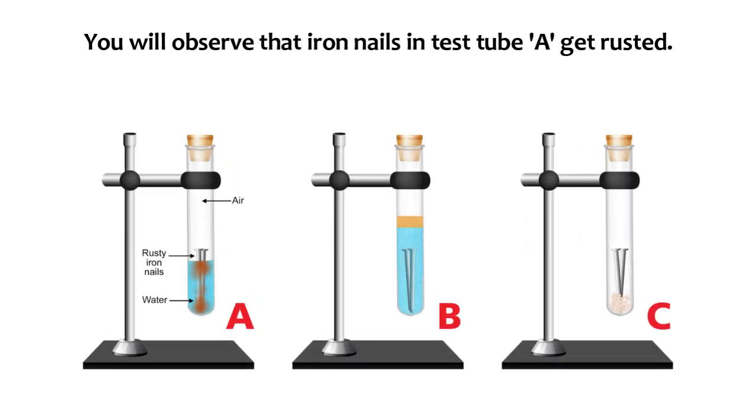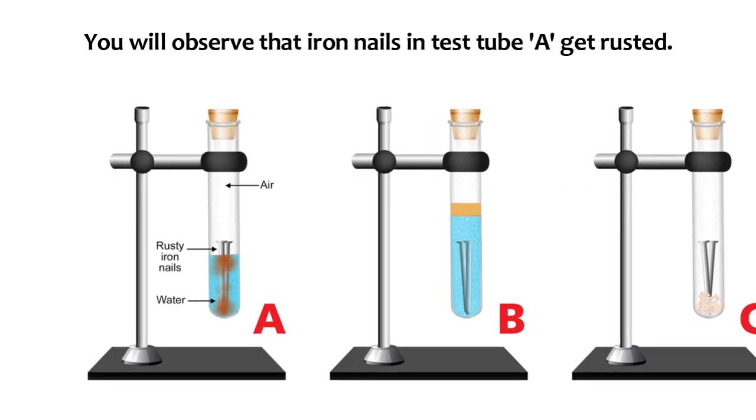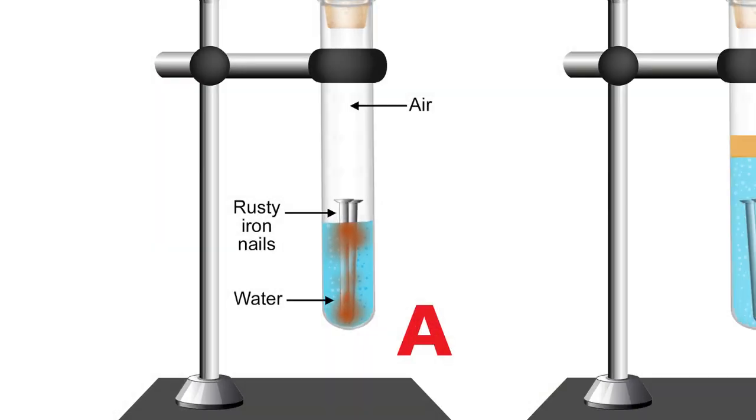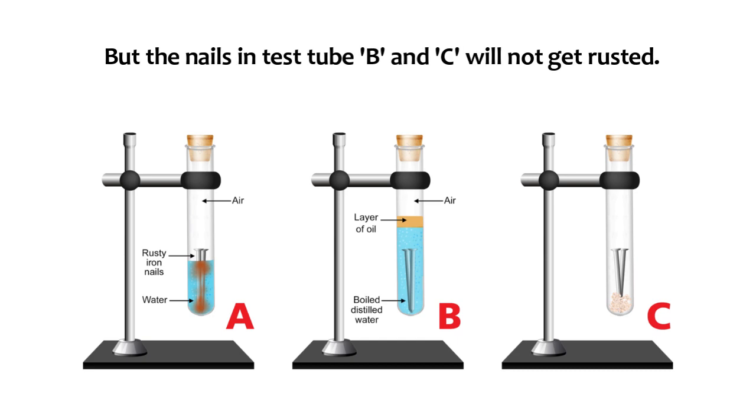You will observe that the iron nails in test tube A get rusted, but the nails in test tubes B and C do not get rusted.